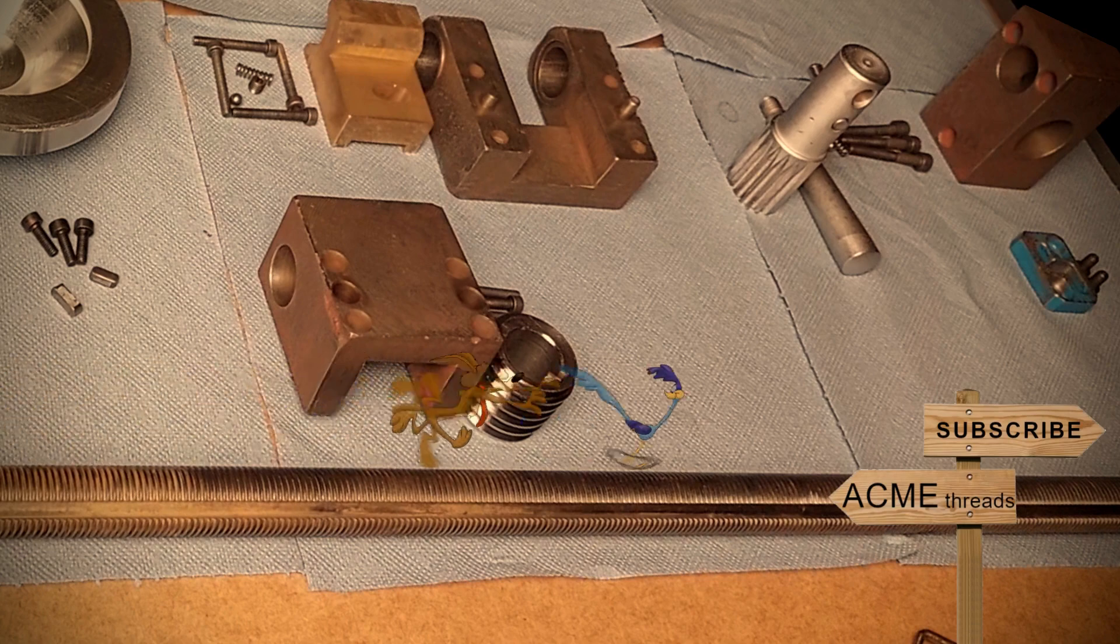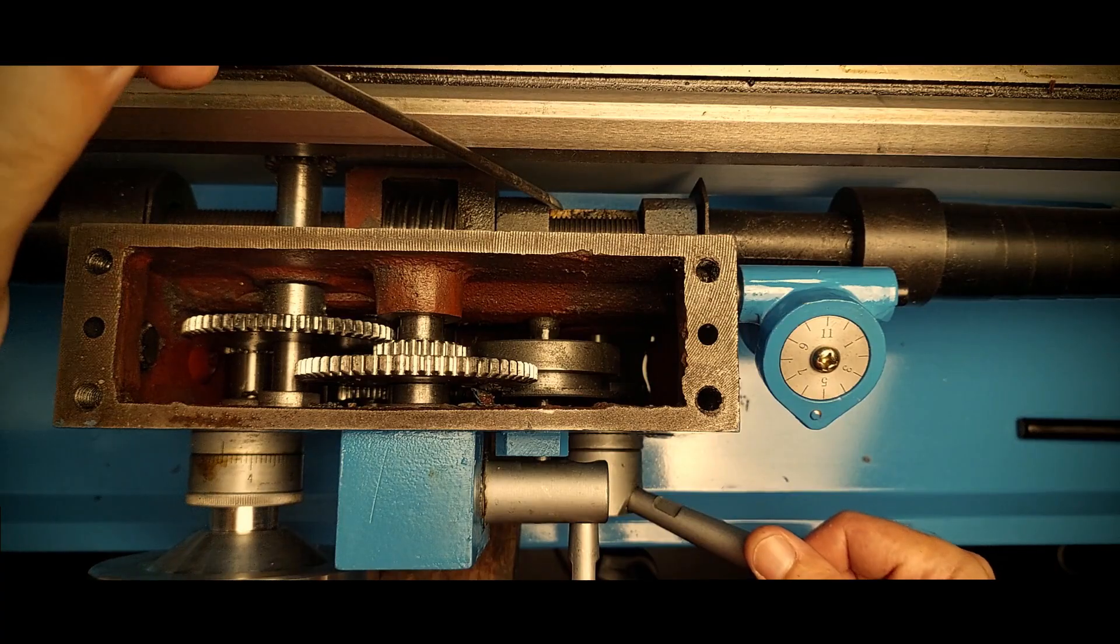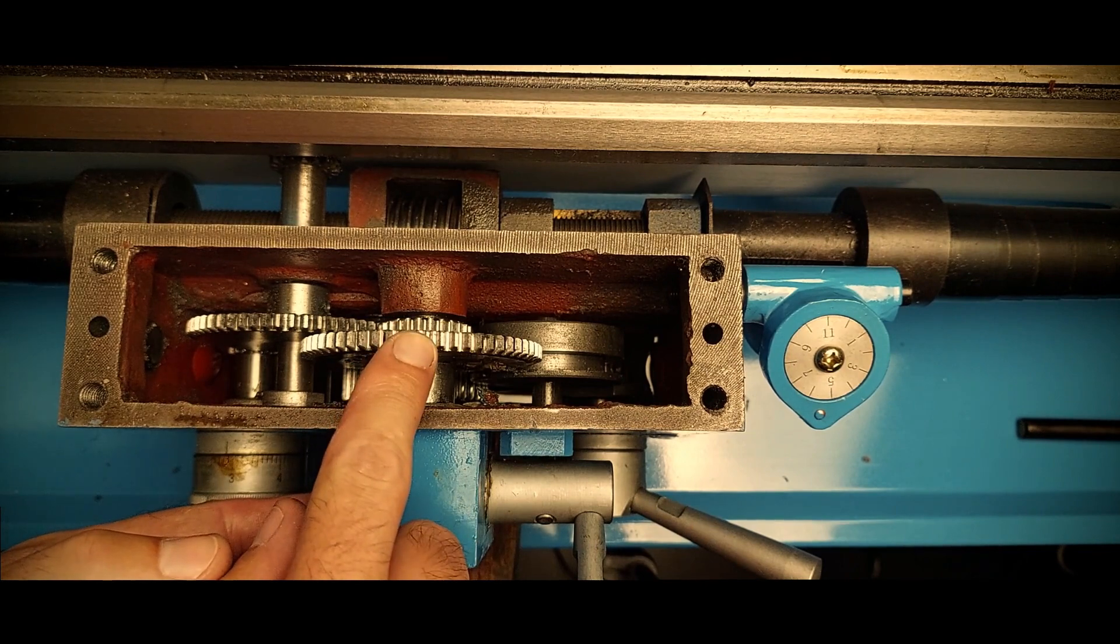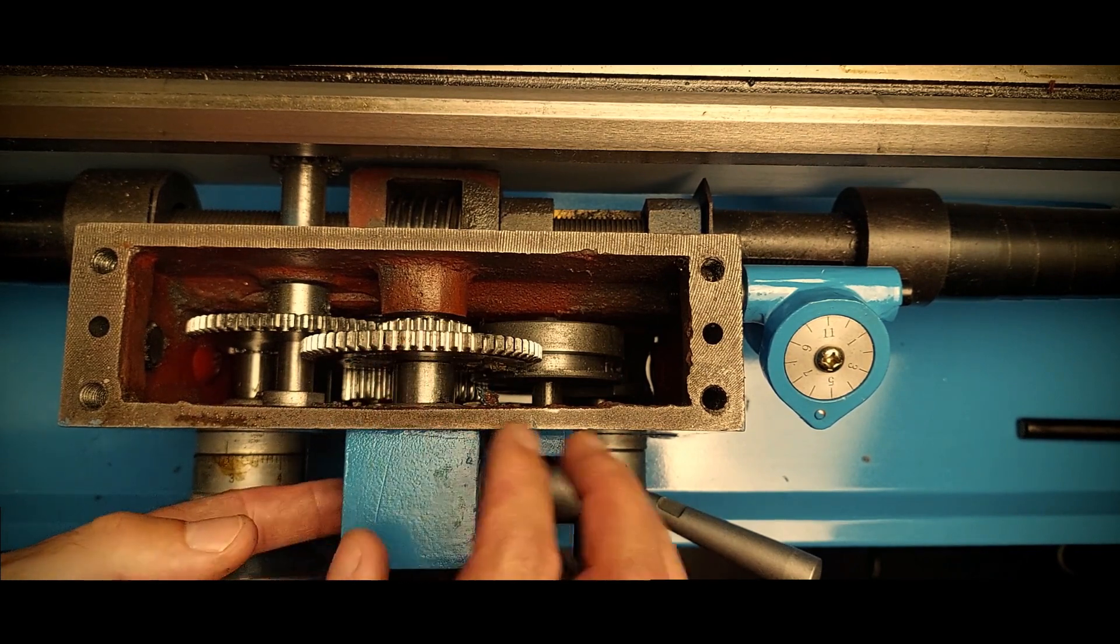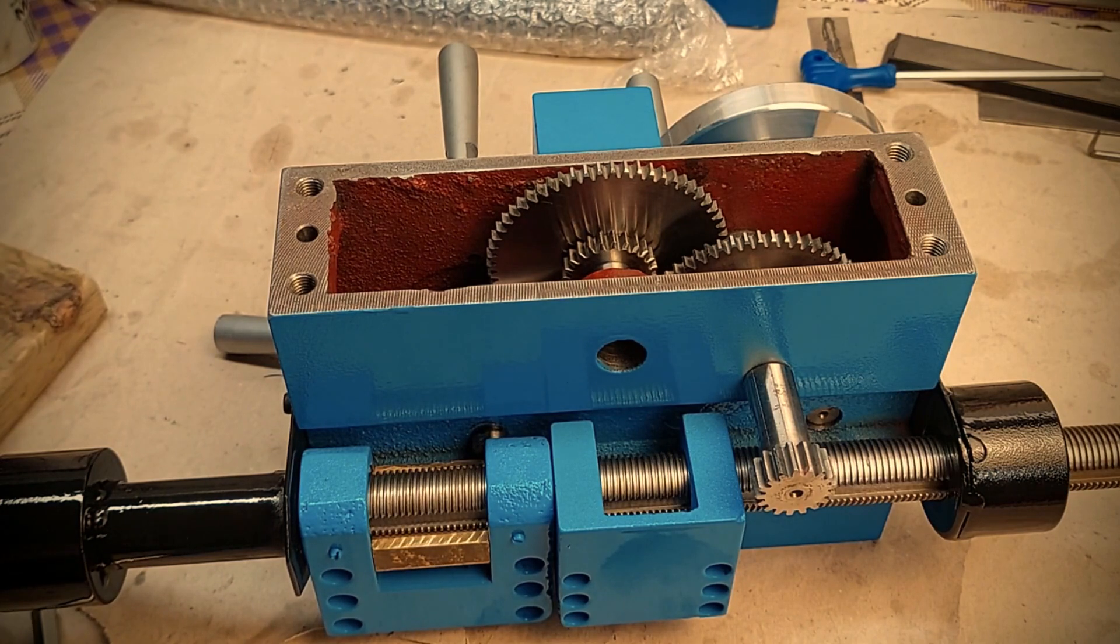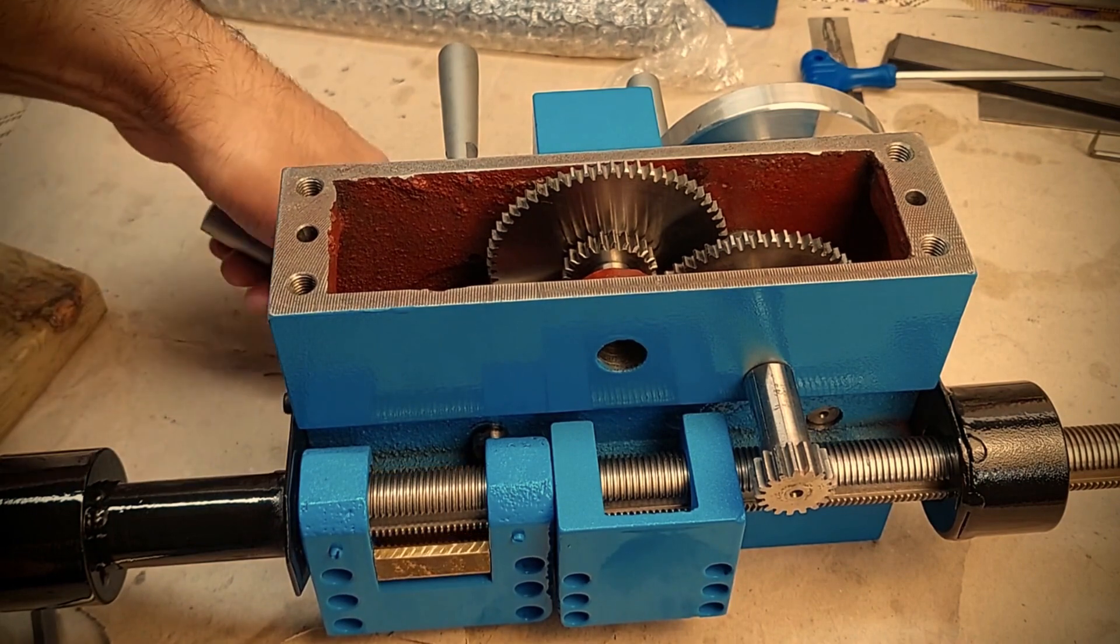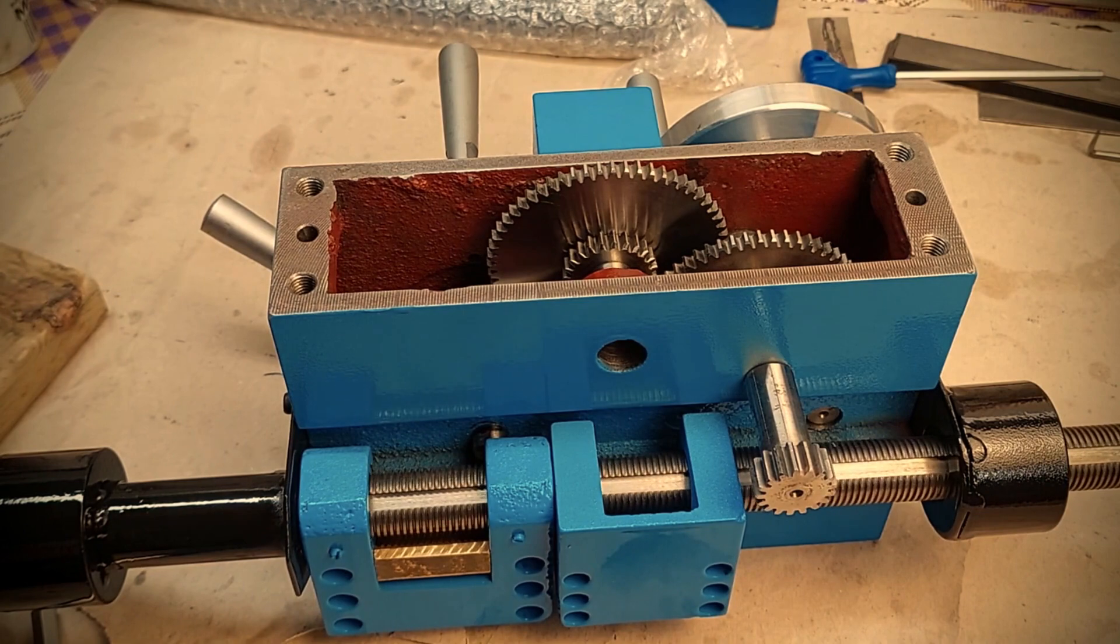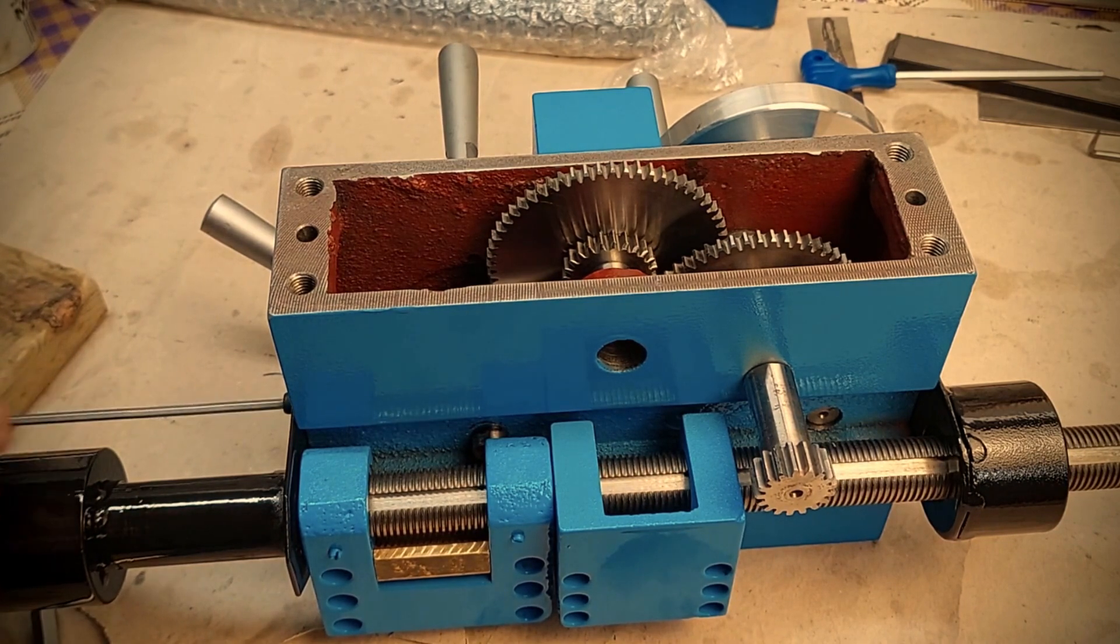Using the acme threads when we engage the half nut, which should only be used for threading, and using the slot driven pinion that indirectly drives the power feed gears. The purpose of the slot drive is to have a dedicated way to power feed while turning without using the threads. Since turning is the most common operation, if we used the threads for that we would be creating unnecessary wear on them. They should be only used for threading.